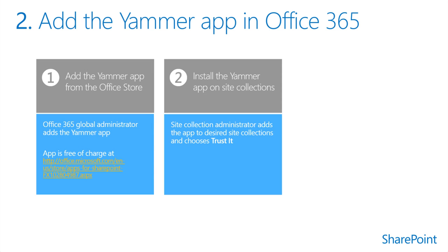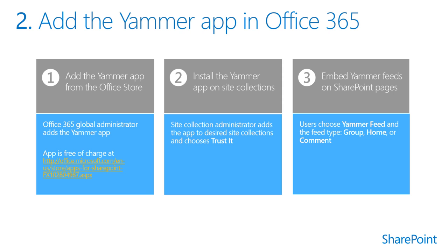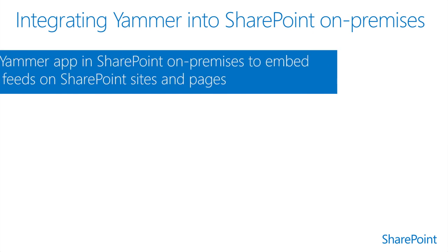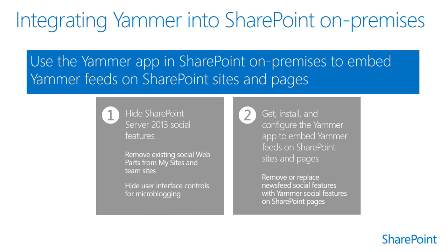To get started adding a Yammer feed to a SharePoint site, you'll get the app from the Office Store — this step requires someone with Office 365 Global Admin credentials. Next, site collection administrators need to add the app to site contents so users can easily find it. In step three, you'll add a Yammer feed to the SharePoint page. To take advantage of Yammer features, it's a good idea to replace the default SharePoint 2013 enterprise social features with equivalent Yammer features. You can remove the SharePoint server social web parts from My Sites and Team Sites and hide the user interface controls that provide social functionality. With SharePoint Server 2013 Service Pack 1, you can use a toggle switch to replace the news feed link with a Yammer link on the top navigation bar.